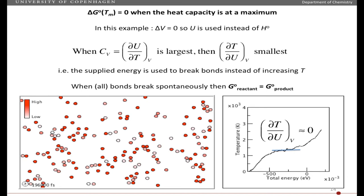So when all the energy goes into breaking the bonds, then all the bonds break spontaneously. And so that means that the standard free energy of the reactant has to be equal to the standard free energy of the product. So the heat capacity is a maximum when the delta G standard at the temperature where the delta G standard change is zero, and that is the melting temperature.